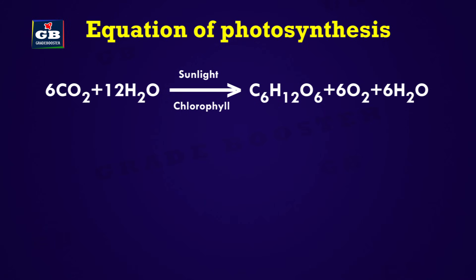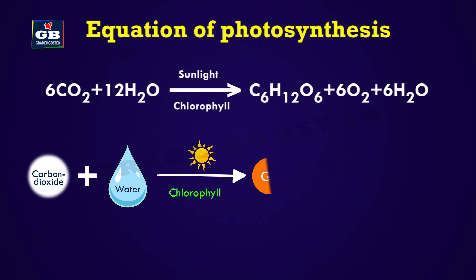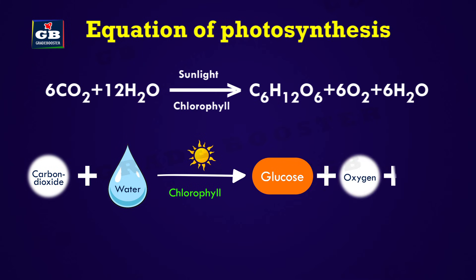From this equation we can understand that carbon dioxide and water react in the presence of sunlight with the help of chlorophyll, and finally produce glucose and oxygen.